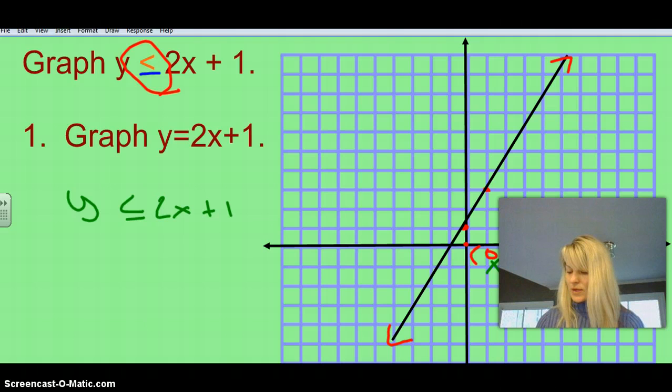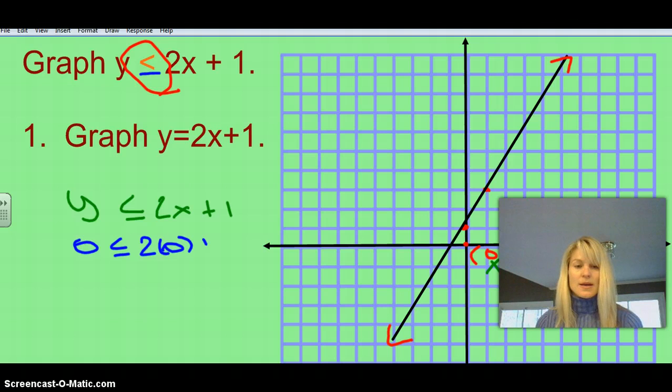So if I plug in 0 for y, I've got my less than or equal to sign here, and I have 2 times x, and x is going to be 0 also, and then plus 1. So I took this part right here, and I plugged it in for my x and my y. So if I solve that now, I have 0 is less than or equal to 0 plus 1.